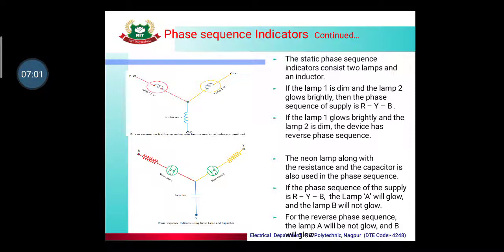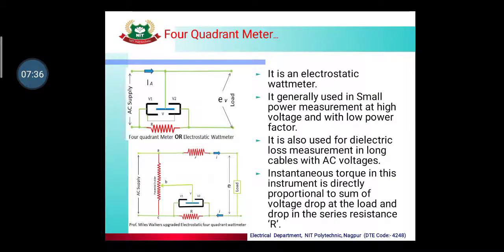In the second static type figure, neon lamps are used along with resistance and capacitor. Here, if the phase sequence is correct — that is R-Y-B — lamp A glows and lamp B does not glow. If the phase sequence is disturbed or reversed, lamp A does not glow and lamp B glows. These indications tell us the phase sequence of the supply.